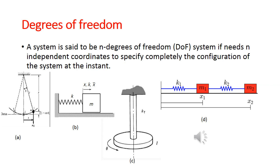Degrees of freedom is a very important topic. The number of independent coordinates needed to specify the configuration of a system is called degrees of freedom. For a pendulum, the degree of freedom is one. For a mass attached to a spring constrained to move in one direction, the degree of freedom is one. For a disc hanging through a rod and rolling — with only rotational motion and no translational motion — the degree of freedom is also one.